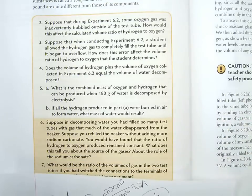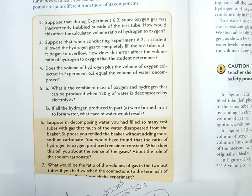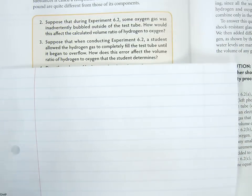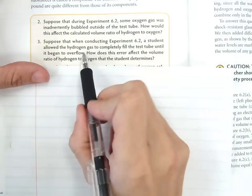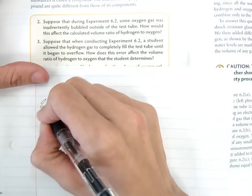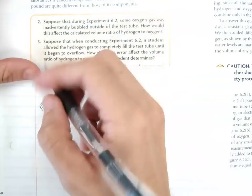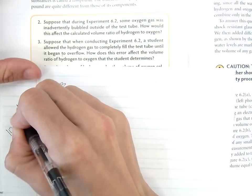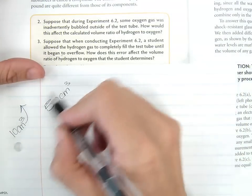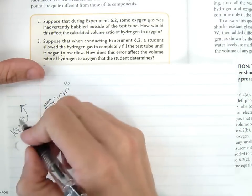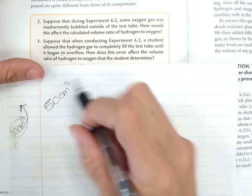Number three. Suppose that when conducting Experiment 6.2, a student allowed the hydrogen gas to completely fill the test tube until it began to overflow. How does this error affect the volume ratio of hydrogen to oxygen? This is another place where human error could be involved. If we filled up the hydrogen test tube entirely — say it holds 50 cubic centimeters — and another 10 cubic centimeters of hydrogen is produced but overflows and escapes, then that escaped gas can't be measured.